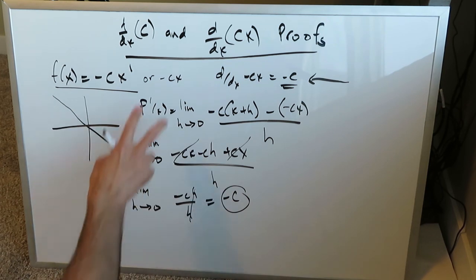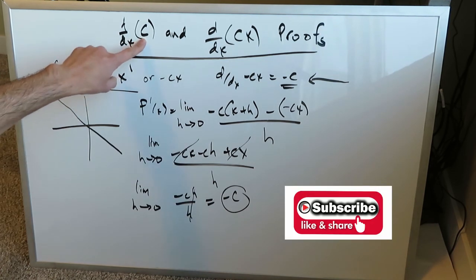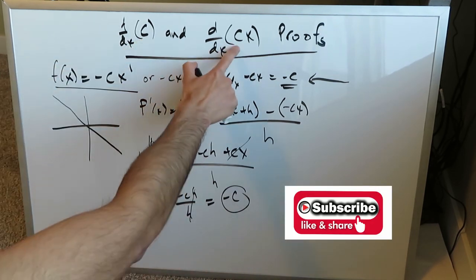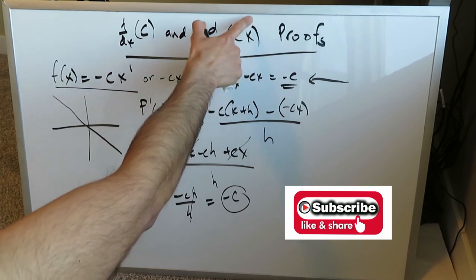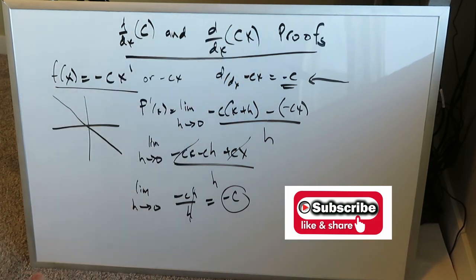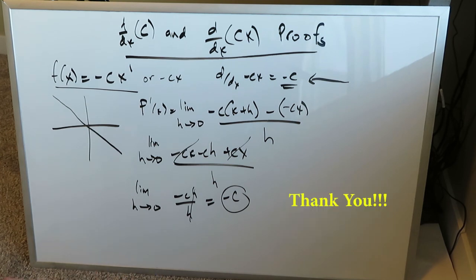Keep in mind: in this video we looked at two of the simplest derivatives. The derivative of a constant is always equal to zero, and the derivative of a constant multiplied by a variable to the exponent of one is always equal to just the constant. That'll be it for this video. I hope you enjoyed it — stay tuned, I have many videos on the way. Thank you for watching, have a nice day.